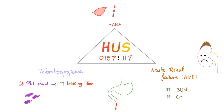Hemolytic uremic syndrome is associated with E. coli O157:H7. It's associated with eating undercooked meat — as Gordon Ramsay would say, it's raw.